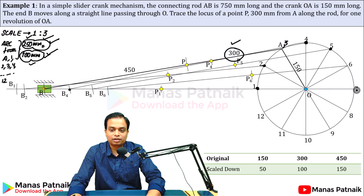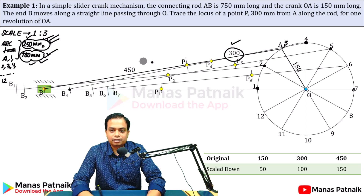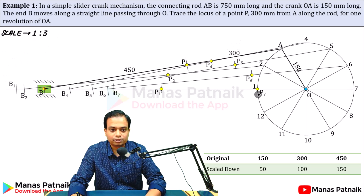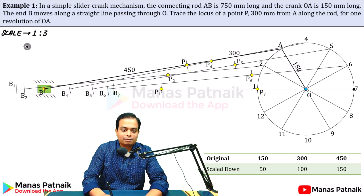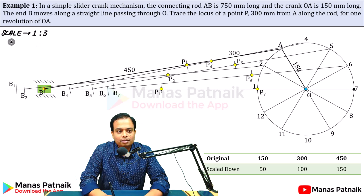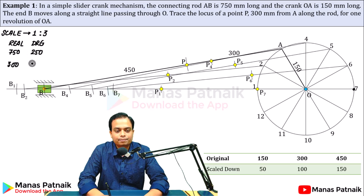For position 7: with 7 as center, cut an arc of 250 mm (drawing) to get B7; then cut an arc of 100 mm from 7 to get P7. Note that the arc for P7 actually overlaps with the crank circle, which is why it may be hard to see. Keep in mind: real distance to B is 750 mm (drawing: 250 mm); real distance to P is 300 mm (drawing: 100 mm).